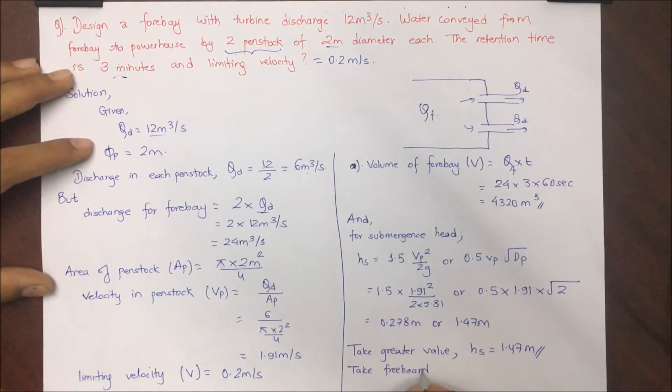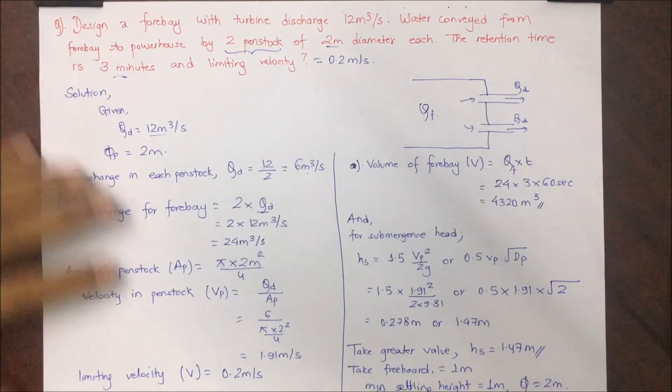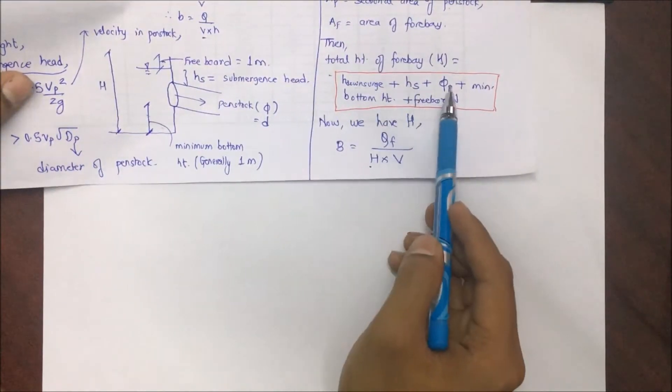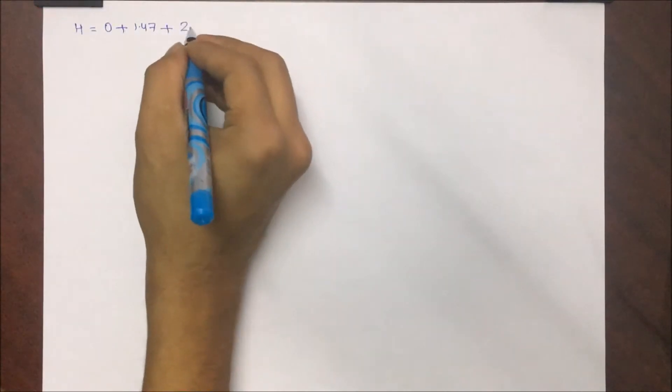Now taking the freeboard of 1 meter and minimum settling height also 1 meter, then we have drawdown charge is 0. Similarly for Hs we have computed it as 1.47 and diameter is 2, and plus 1 plus 1, that is freeboard and minimum height of settling. This comes as 5.47 meters.